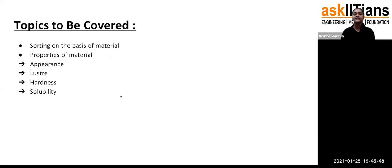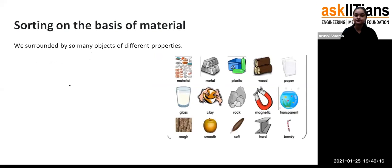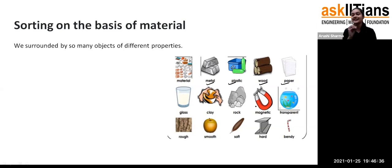Now moving ahead, these are the topics we are going to cover: sorting on the basis of material, and properties of material — the properties on the basis of which we can classify different types of material. These properties are appearance, luster, hardness, and solubility. We are having so many materials like metal, plastic, wood, paper, glass, clay, and rock in our surroundings.